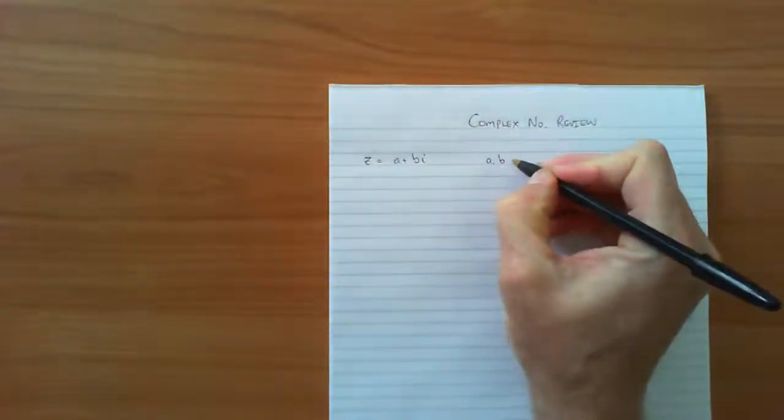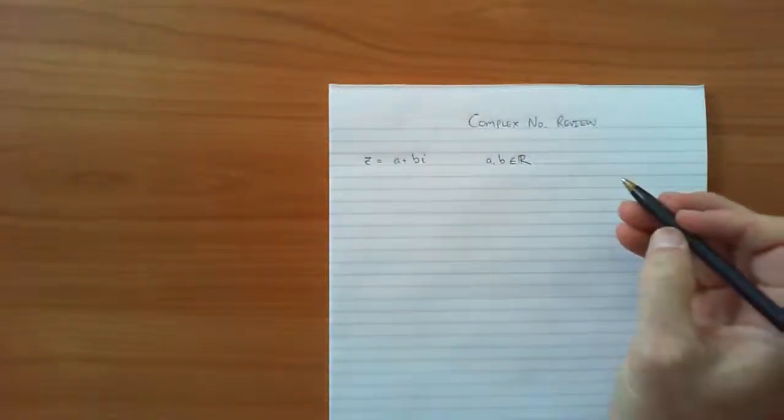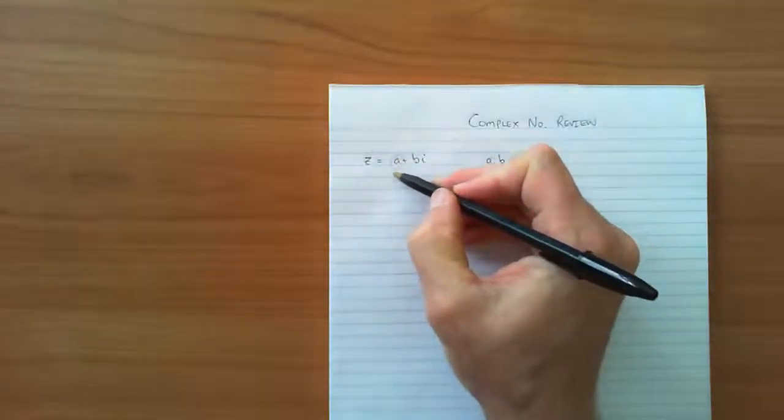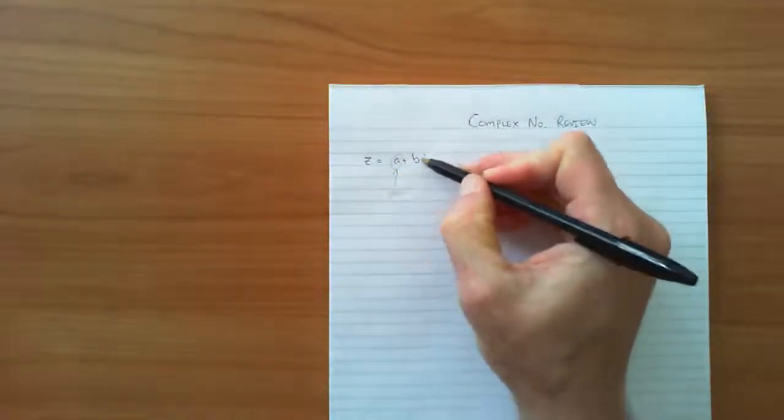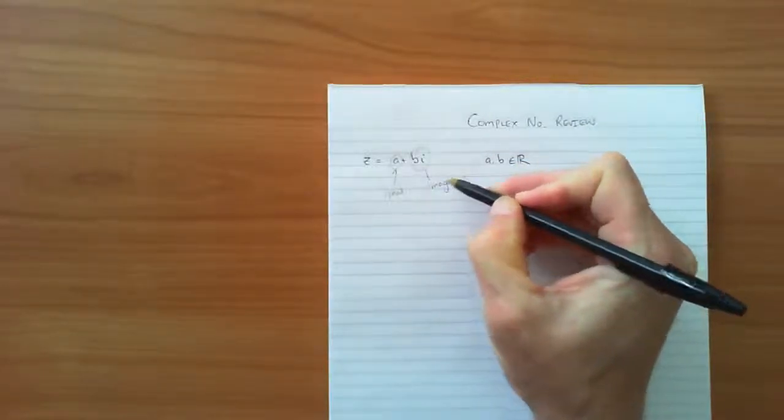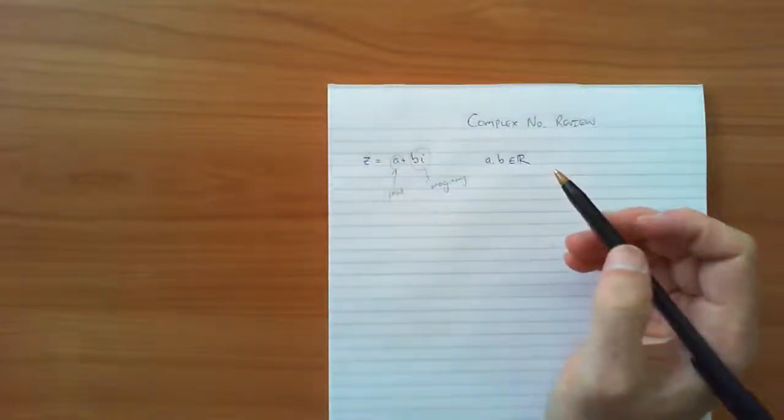Now A and B are real numbers. I is the imaginary part of the complex number, but we say the A here is the real part and the BI is the imaginary part, even though A and B themselves are real numbers.